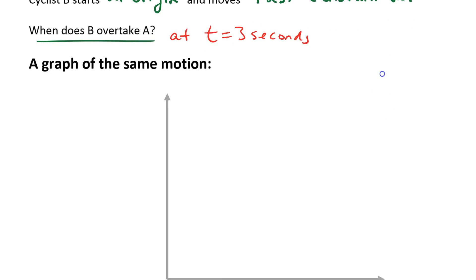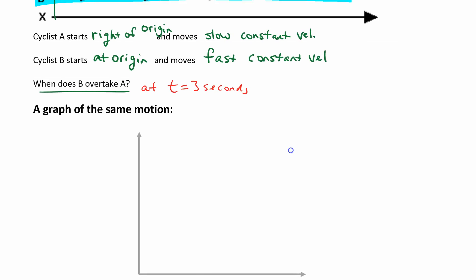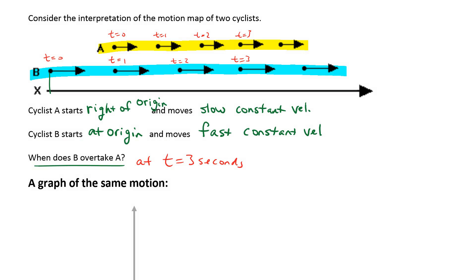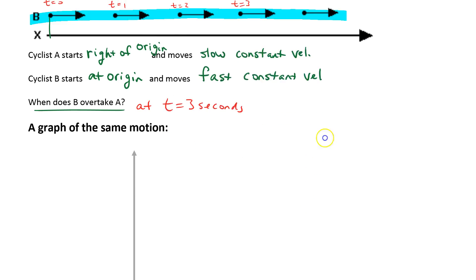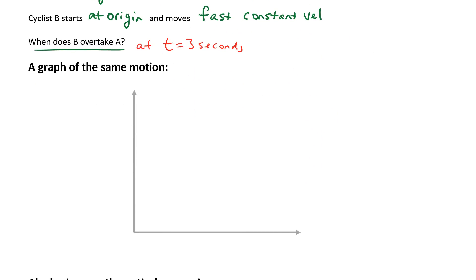So could we make a graph of this same motion? Let's see. If we say that A starts to the right of the origin, first of all we should label our graphs here. This one is going to be time, and we're going to measure that in seconds. And this one is going to be our position, our horizontal position, x. We don't know what units to put. I don't have any numbers anyways.